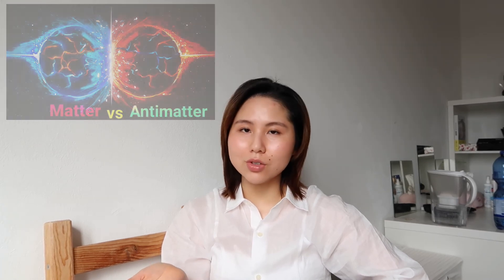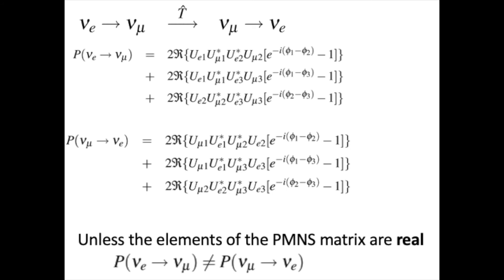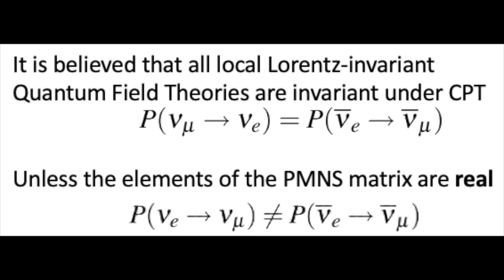You can calculate the oscillation probability in all other cases as well by assuming that the PMNS matrix is real. However, in reality we are not sure, and we want to measure whether the PMNS matrix is real — because if it is not real, then CP violation is allowed in neutrino oscillation within the Standard Model, giving us a hint on why we have more matter than antimatter in our universe today. If T, CP, and CPT are conserved in neutrino oscillation, then three relations are valid. If the PMNS matrix is not real, then T will be violated. Since all local Lorentz-invariant quantum field theories are invariant under CPT symmetry, if T is violated, CP will also be violated. Therefore, if there are imaginary components inside the PMNS matrix, then CP violation is allowed in neutrino oscillation.